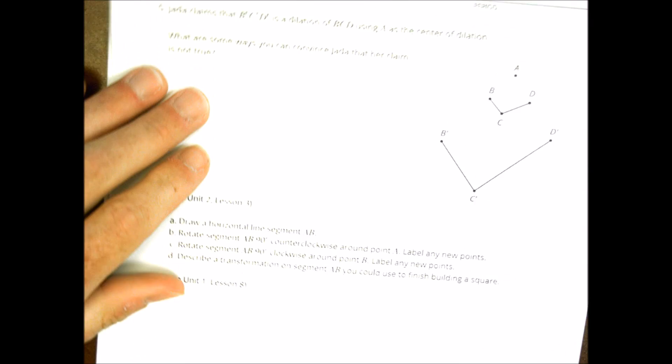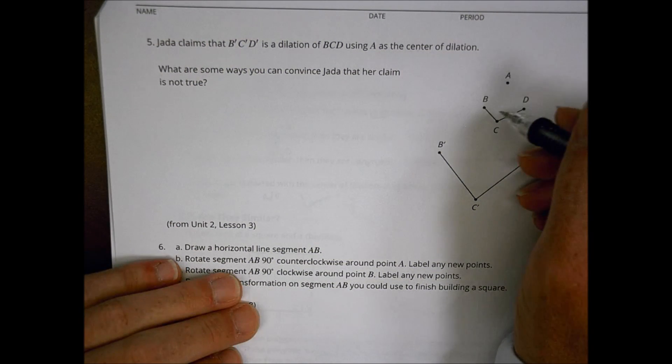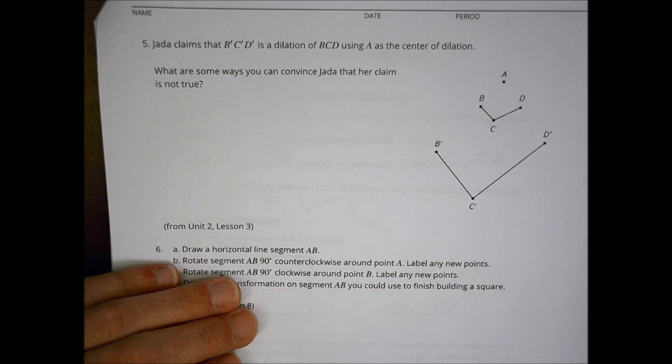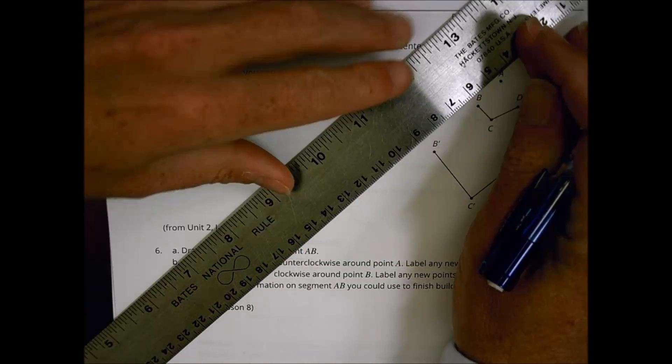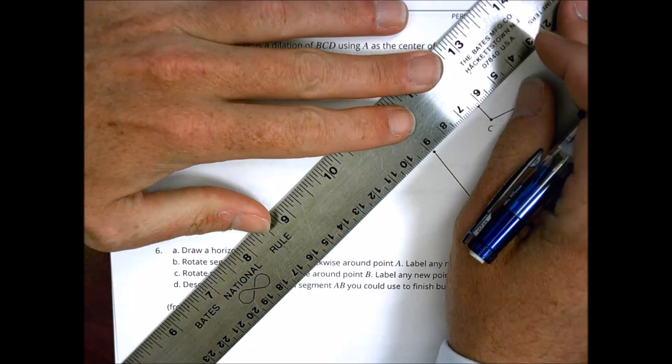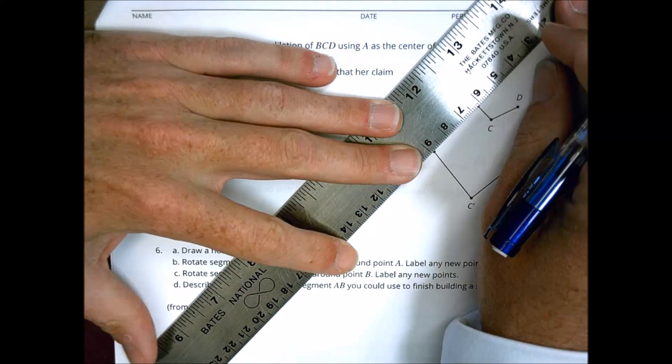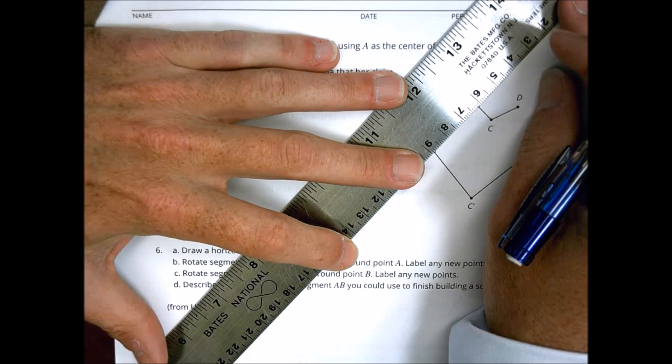And let's take a look at number 5. Jada claims that BCD prime is dilation of BCD using A center dilation. How can we convince her that she's just not quite right there? So, a couple of ways we can look at it. One, we could take our dilation points here and we can line them up and see if we can line them up. And I'm already having trouble getting those just right.